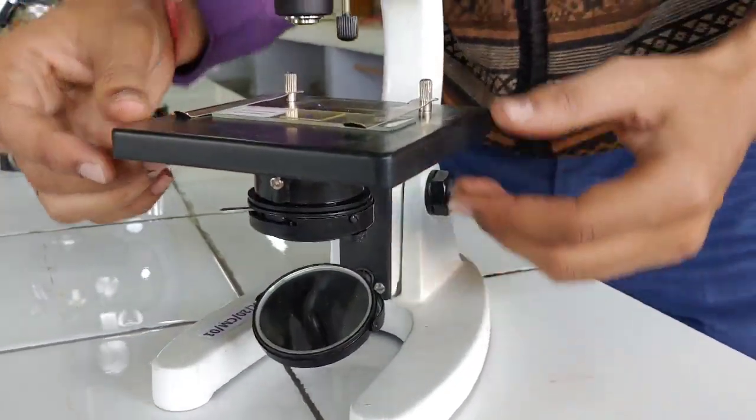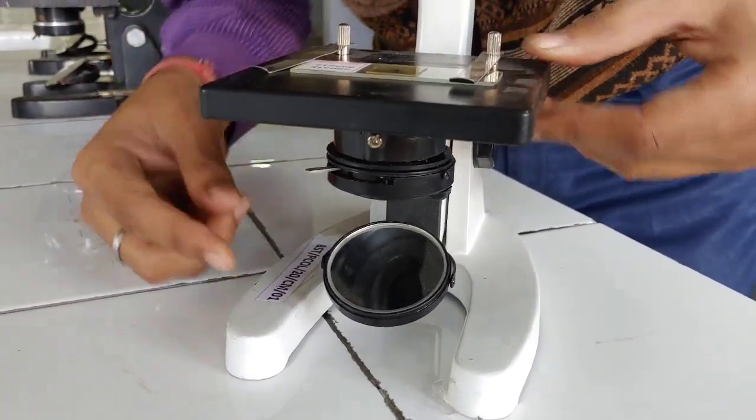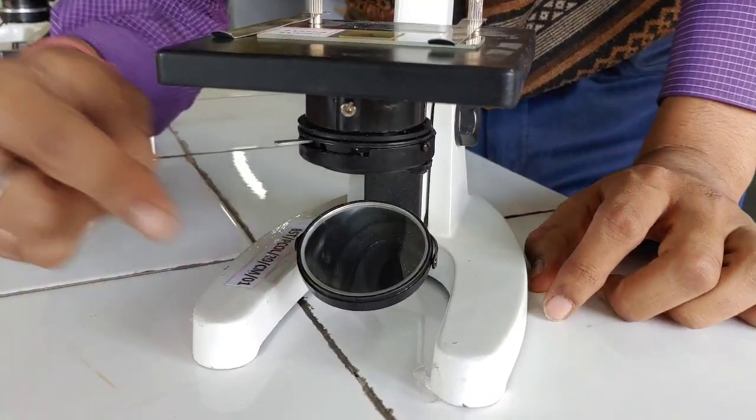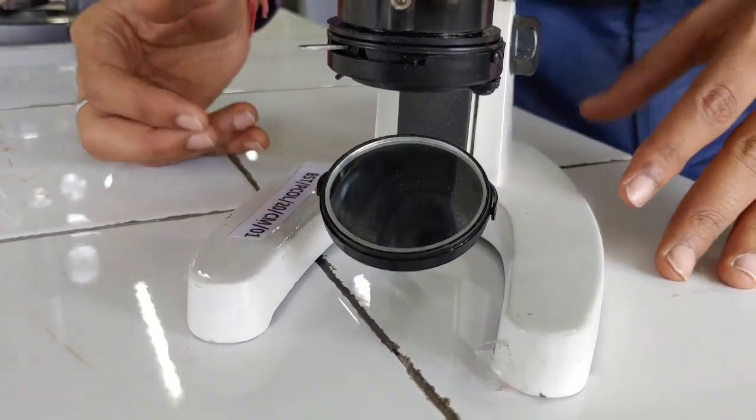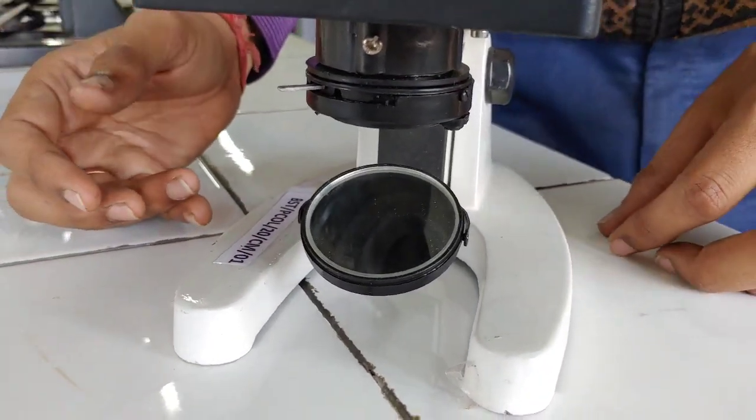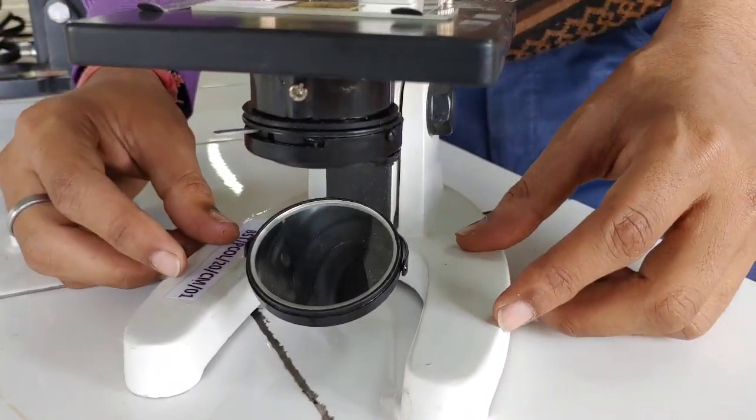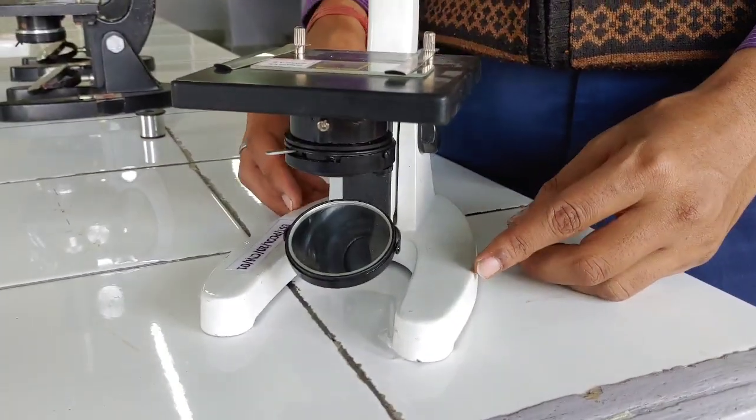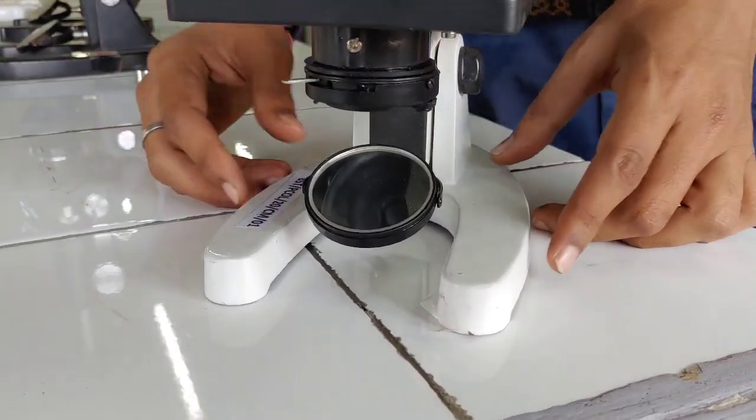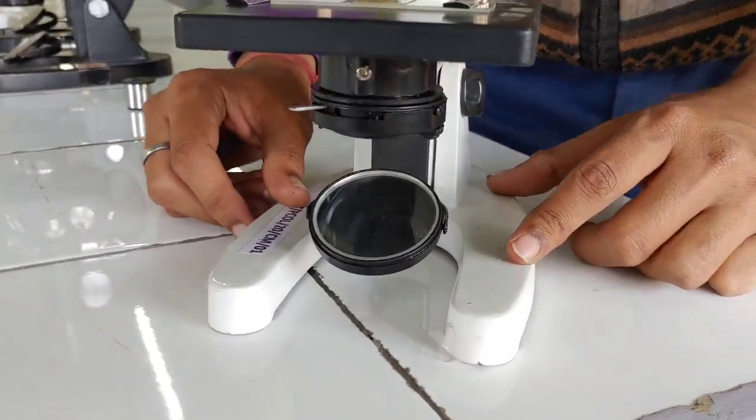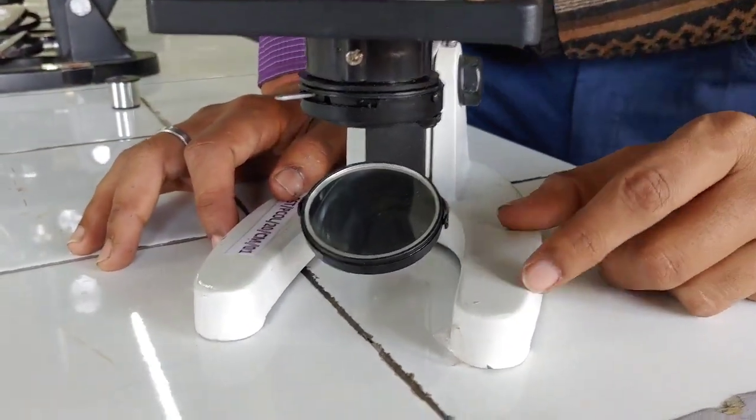Now, the next component is the illuminating system. First is the source of light. It is a system which may be external or it can be internal. External can be your daylight or electric lamp or tube light. Or internal source can be the inbuilt light source. In this basic compound microscope, this is not present. Only the external light is acceptable here. But some modern microscopes are there where you can use the inbuilt screen or source of light.